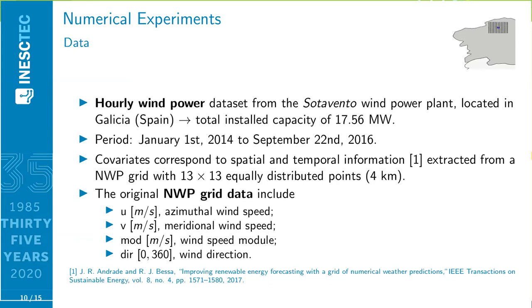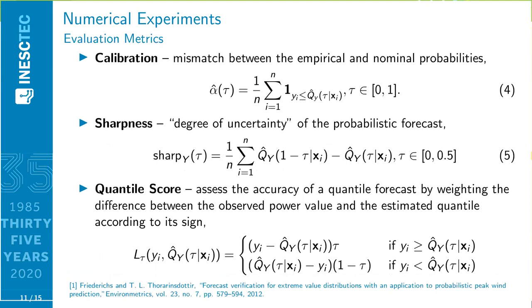In what follows, the case study is presented. The wind power data is from a wind power plant in Spain. The historical period is almost three years. The covariates used in GBT models correspond to the spatial and temporal information extracted from a numerical weather prediction grid with 13 by 13 equally distributed points and is related to U and V components of the wind, as well as the wind speed model and direction.